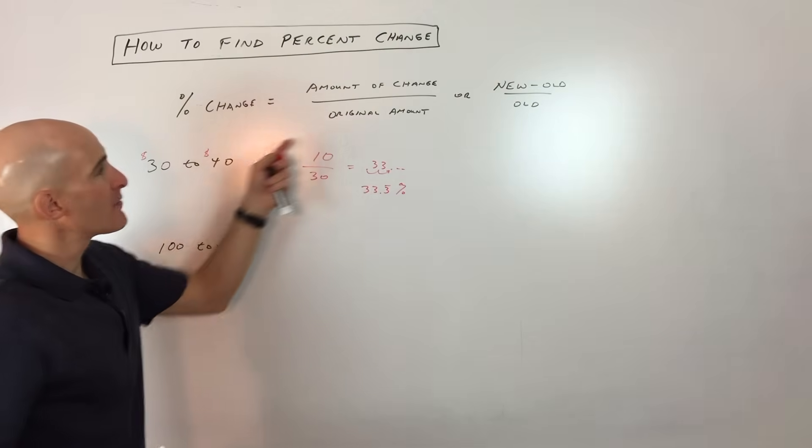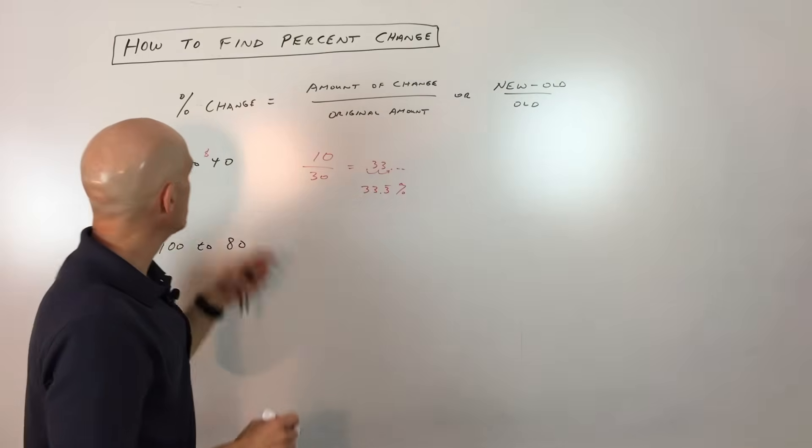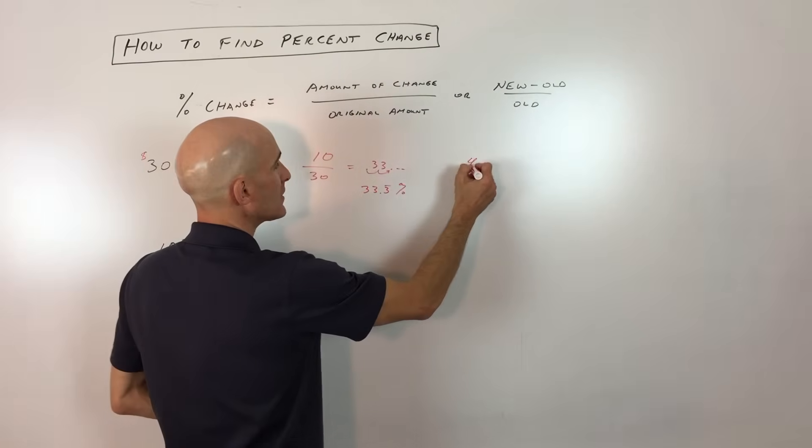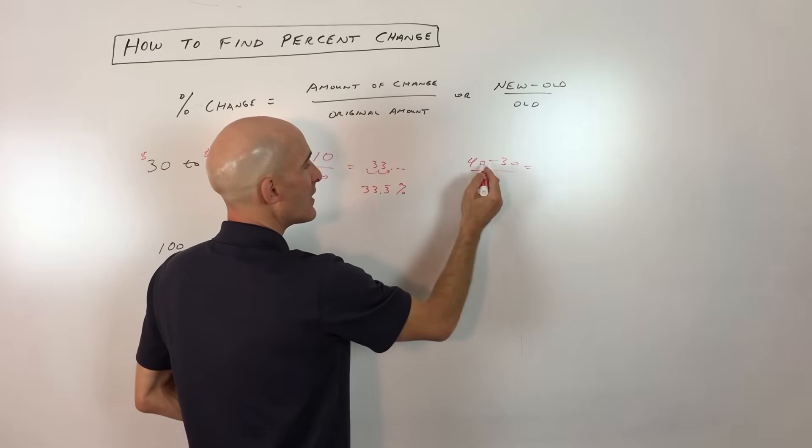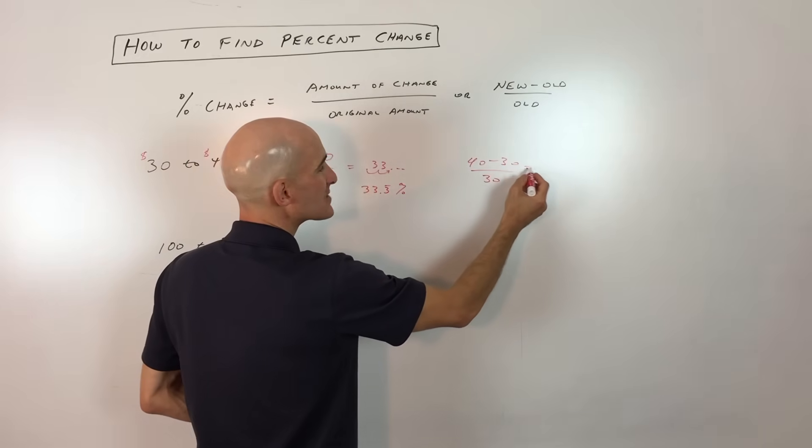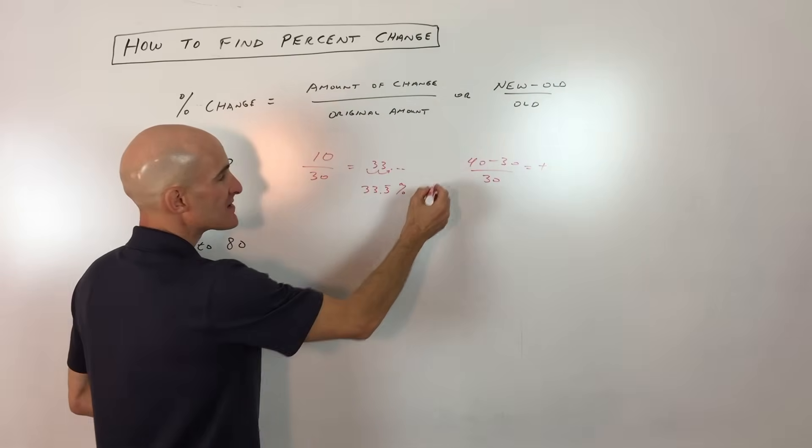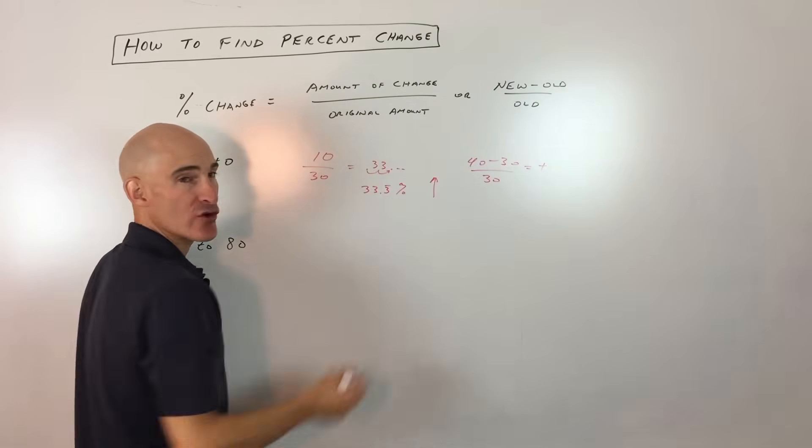Now the one thing that I like about this formula - new minus old over old - is we would say the new amount is 40 minus the old amount which is 30, divided by 30. And we can see that this is coming out to a positive number, which means this is a 33.3% increase.